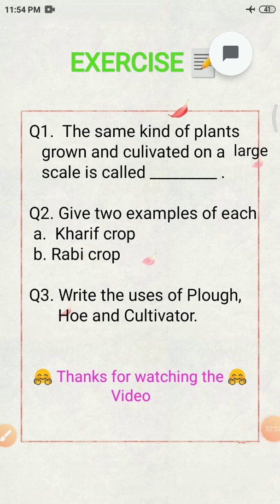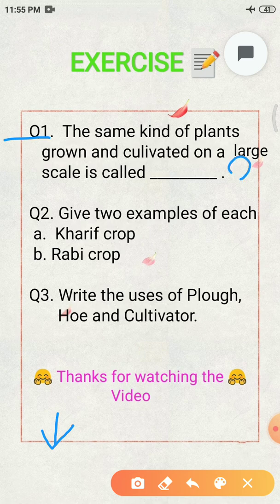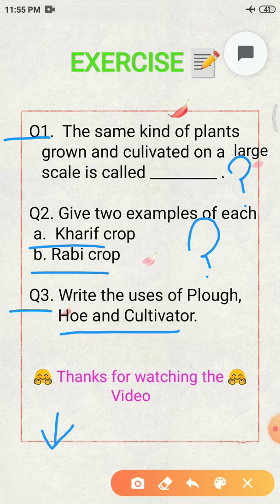Before ending the topic, I want to give you some exercise questions so that you can judge how much you have learned. You can also give the answers in the comment box. Question 1: plants of the same kind grown and cultivated on a large scale is called? Question 2: Give two examples each of Kharif crops and Rabi crops. Question 3: Write the uses of plough, hoe and cultivator. Thanks for watching the video.